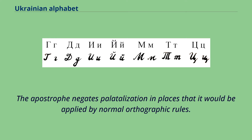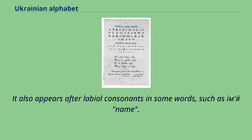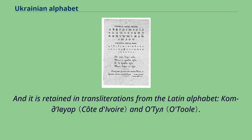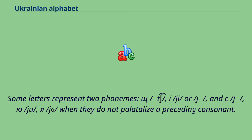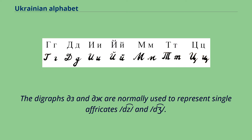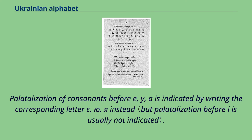The apostrophe negates palatalization in places where it would normally be applied by orthographic rules. It also appears after labial consonants in some words, and is retained in transliterations from the Latin alphabet. There are other exceptions to the phonemic principle: some letters represent two phonemes, such as /g/ and /j/ or /dʒ/ and /j/, when they do not palatalize a preceding consonant. The digraphs are normally used to represent single affricates /dz/ and /dʒ/.